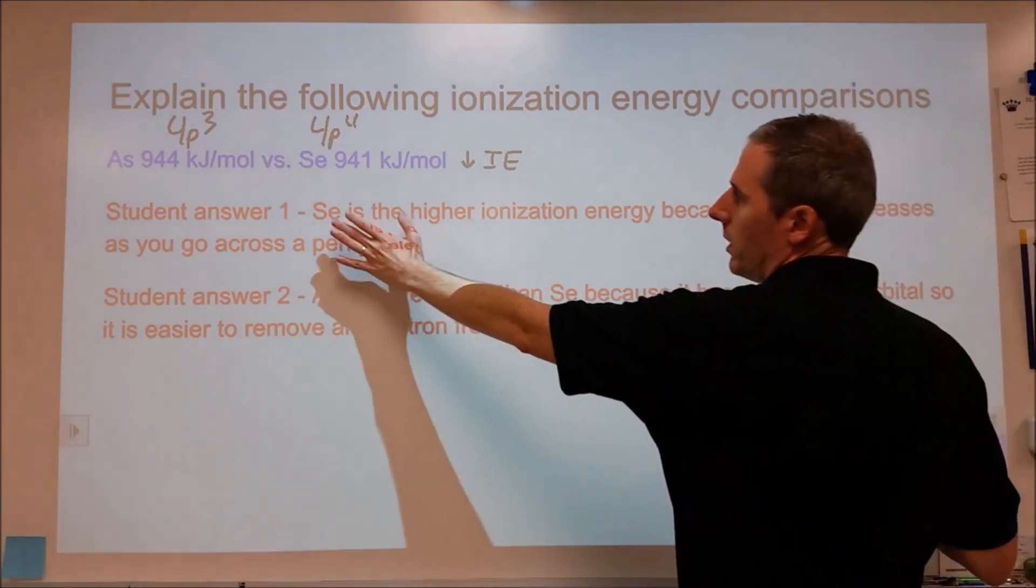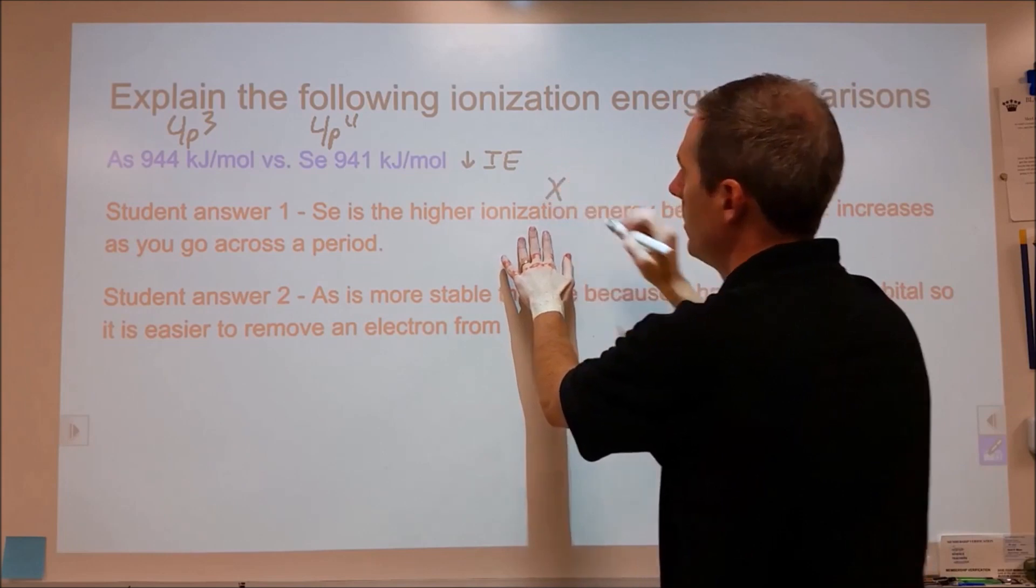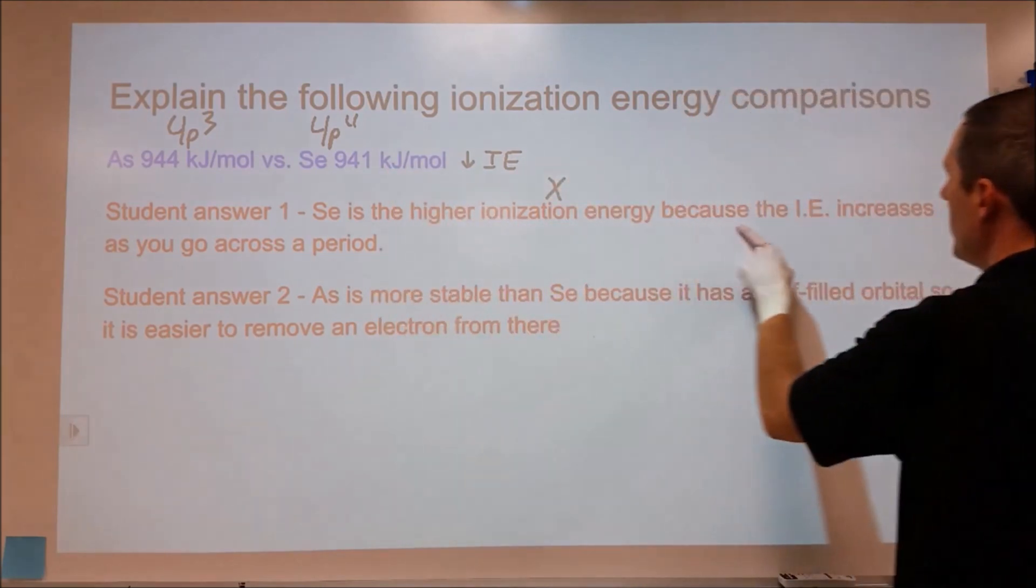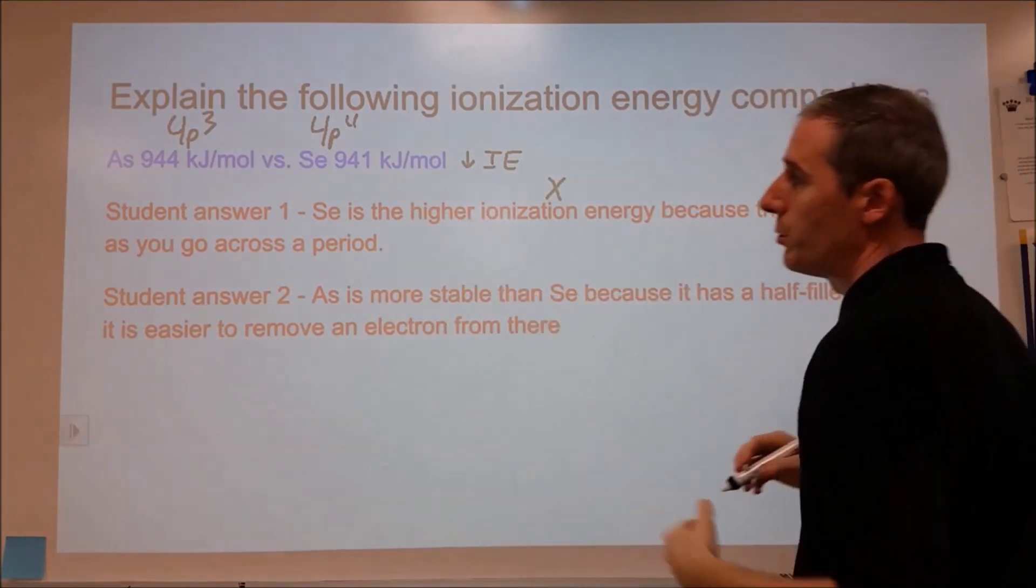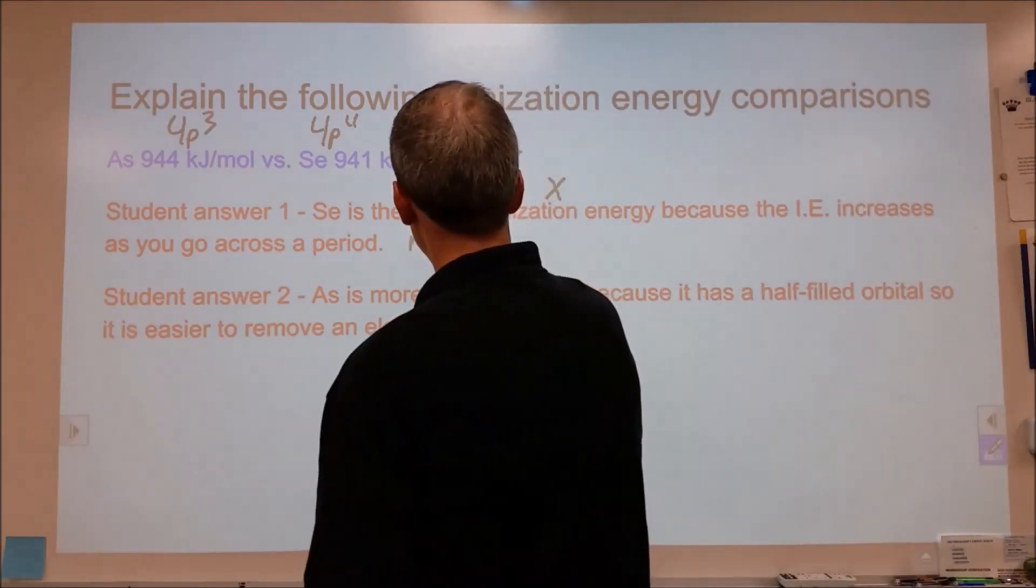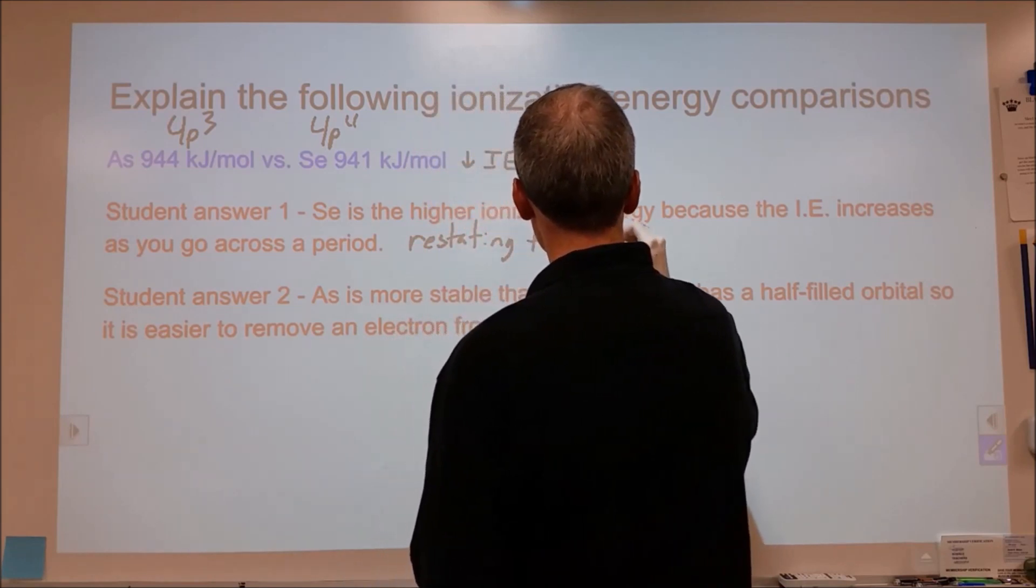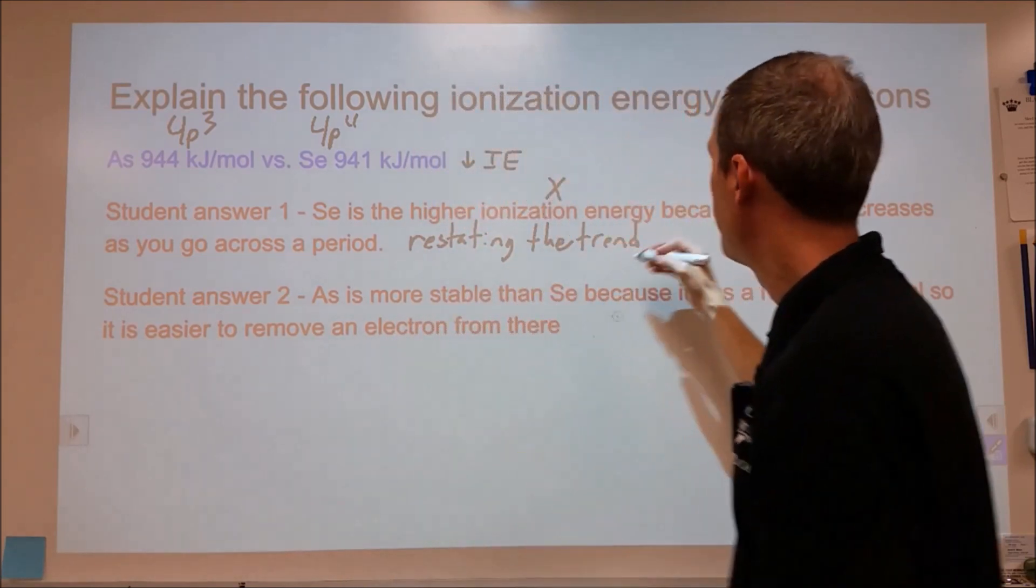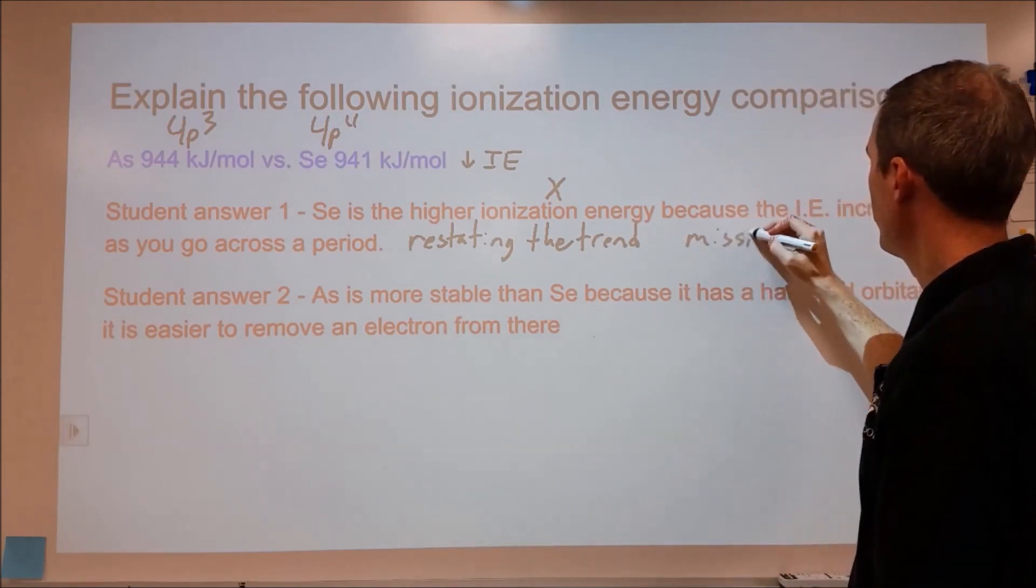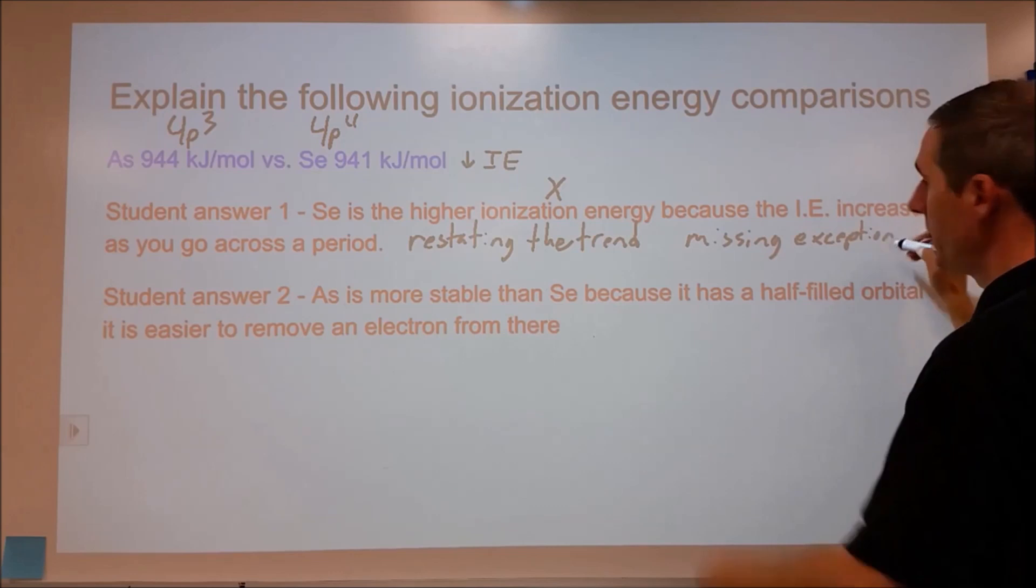So student answer 1: selenium is the higher ionization energy. Okay, so that is not true. Selenium is lower because the ionization energy increases as you move across the period. So this is restating what the trend is, but it's missing that we have an exception here.